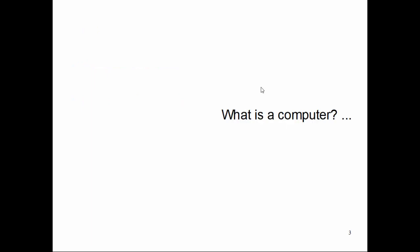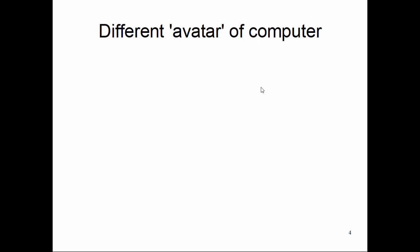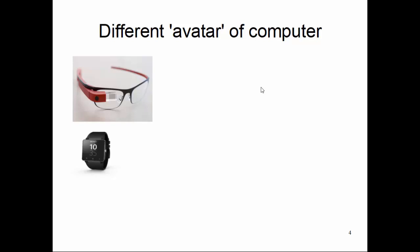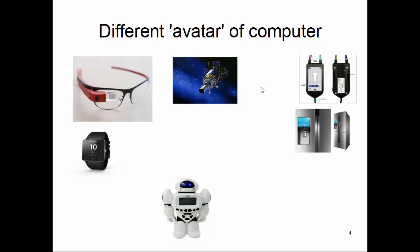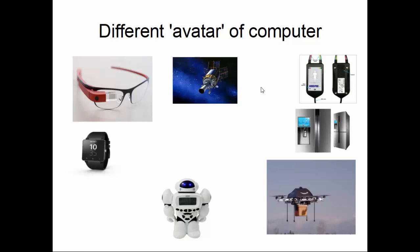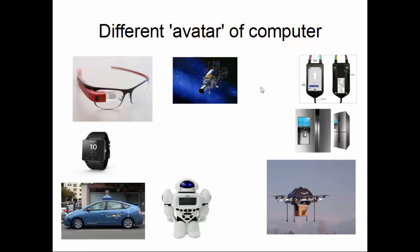We all have some idea of what a computer is, and we have seen many different forms of a computing system — let's call them different avatars. They come in so many surprising forms: Google Glass has a little computing system inside it, a smartwatch is itself a computing system, and there are smart refrigerators, satellite systems, playing toys like iRobot, medical devices, and drones like Amazon's delivery system.